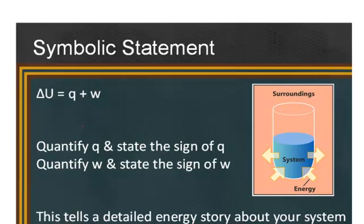So in order to understand the change in internal energy, you have to be able to quantify Q, the heat flow, and state the sign of Q. You need to be able to quantify W, the work, and state the sign of work in order to correctly calculate delta U.